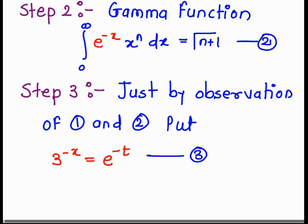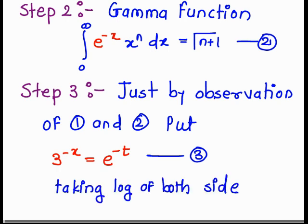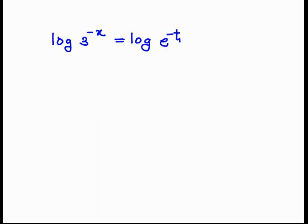To substitute this value into the integration, we need to find out the limits and the value of dx. Taking log of both sides: log of 3 raised to minus x is equal to log of e raised to minus t. So minus x log 3 is equal to minus t log e.